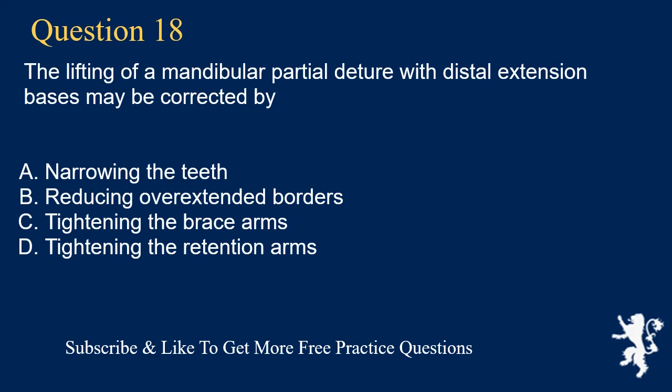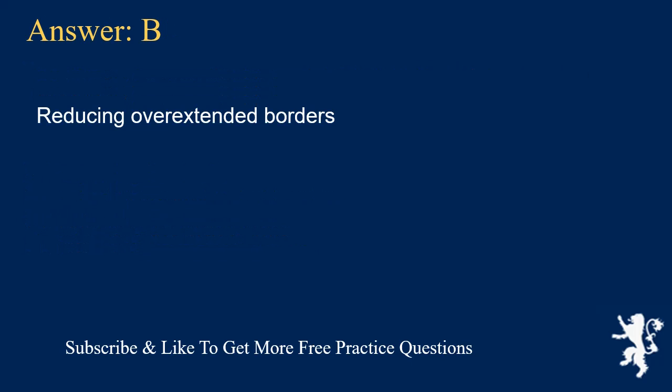Question 18. The lifting of a mandibular partial denture with distal extension bases may be corrected by: A. Narrowing the teeth, B. Reducing overextended borders, C. Tightening the brace arms, D. Tightening the retention arms. Answer: B. Reducing overextended borders.